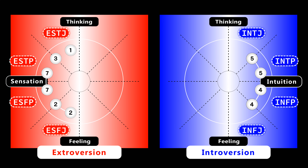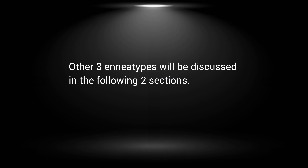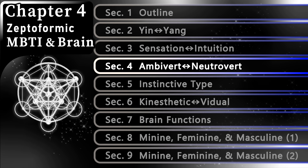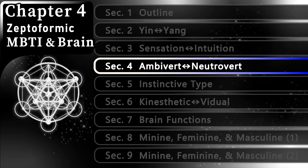In this section, we found the correlation between MBTI types and 6 enneatypes. The other 3 enneatypes will be discussed in the following two sections. Chapter 4, Section 4: Ambivert and Neutrovert.